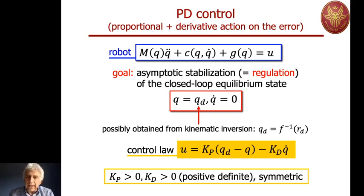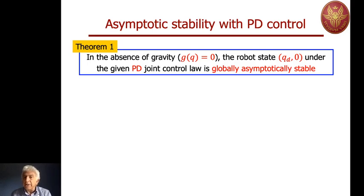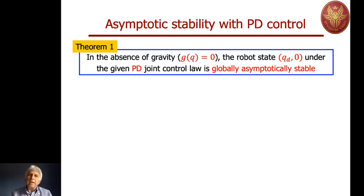We will study this simple control law under the condition where g(q) is identically zero. We have a theorem to prove: in the absence of gravity, when g(q) is identically zero — so motion occurs at constant potential energy — the desired robot state (q_d, 0) is a globally asymptotically stable equilibrium under the given PD joint control law. It is worth mentioning that, despite the highly coupled and nonlinear dynamics of the system, a linear control law like PD is able to achieve quite an important result.